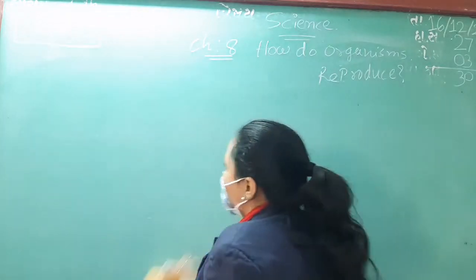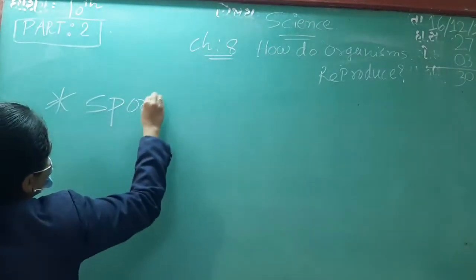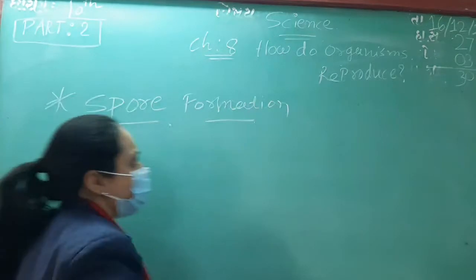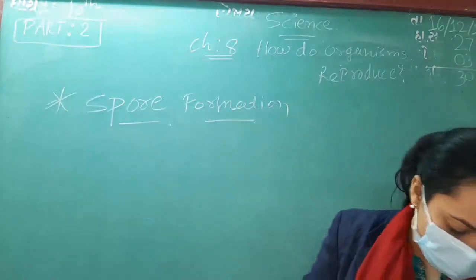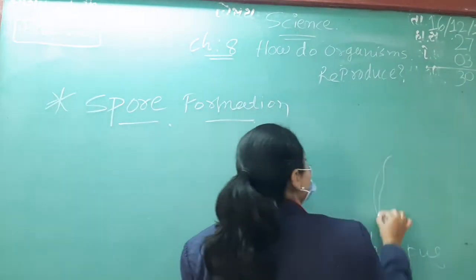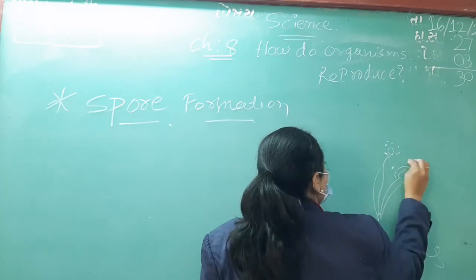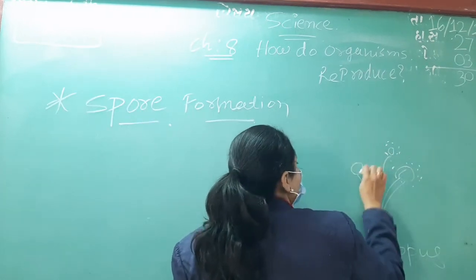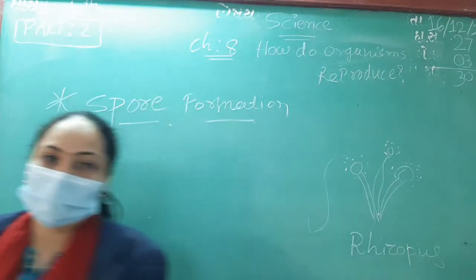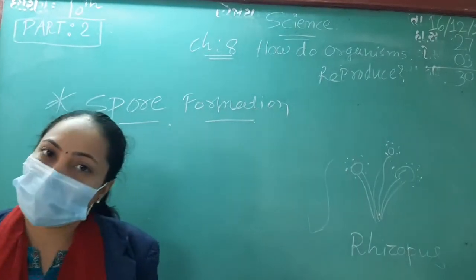Now the next topic is spore formation. You have studied spore formation in 7th and 8th standard. In spore formation, the spores fall down and fall down with water, and then they grow. We call this spore formation. An example of spore formation is Rhizopus.